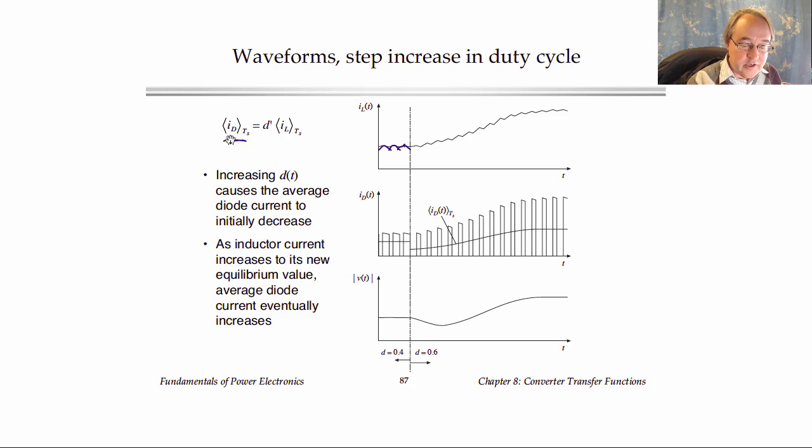And its average, which is D prime times IL, is also illustrated here. Finally, I've illustrated the output voltage as well. So at this point right here, we turn the duty cycle up from 0.4 to 0.6. And we would expect the boost converter, with a larger duty cycle, would make a larger output voltage, and so the output voltage should rise. But what happens to the average diode current?